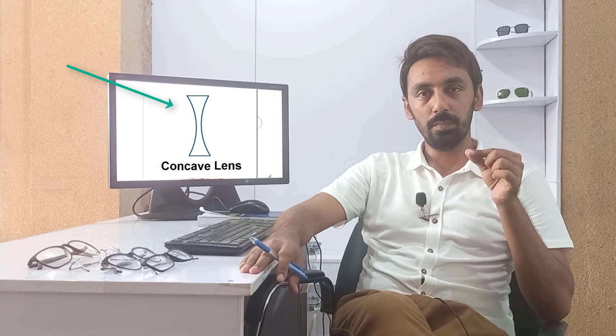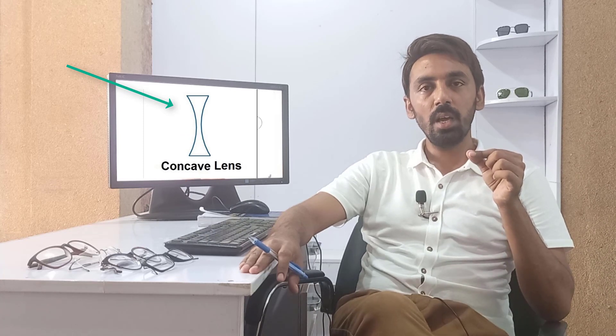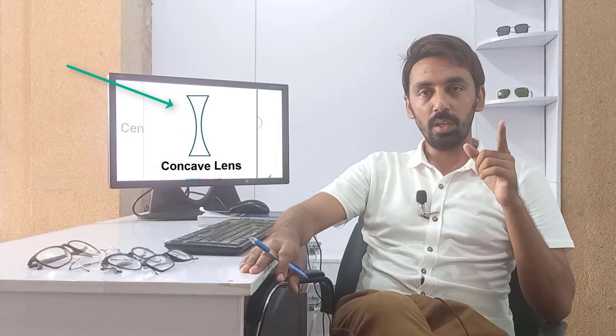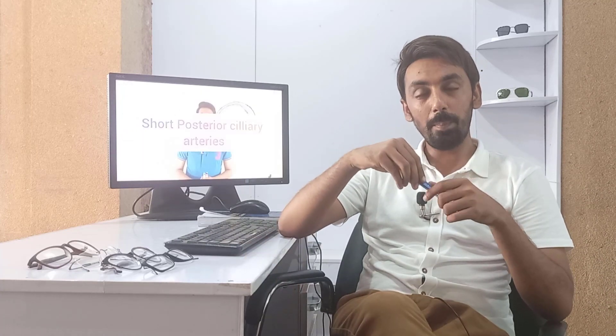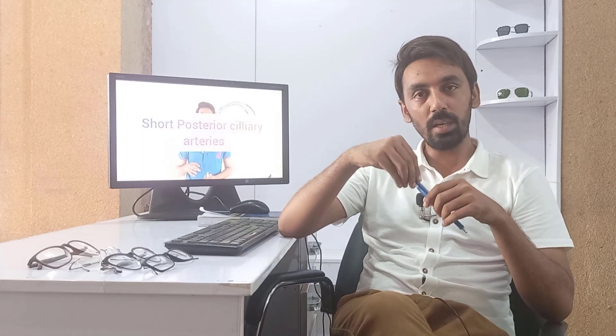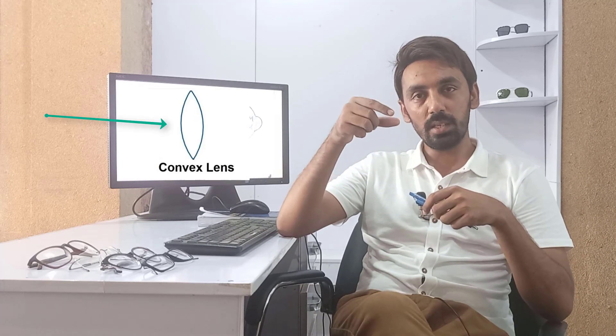Concave lenses — the minus lenses, or diverging lenses — diverge the light rays. These minus spherical lenses are very thin at the center and very thick at the periphery, at the edges. The hyperopic lenses — the plus lenses, or converging lenses — are very thick at the center and very thin at the periphery.